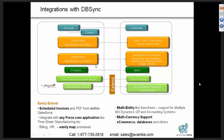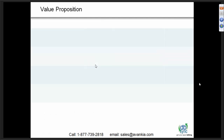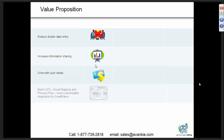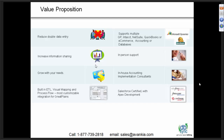We're going to jump into the product demonstration, but before that I'd also like to talk about the value proposition. The reason for using DB Sync is to reduce double data entry and increase information sharing. You can also grow with your needs. This is built on ETL — extract, transform, and load — and we also have visual mapping and process flow. This is the most customizable integration for GP. One of the databases is a master database and you push and pull information from there, sharing it across the board, so you can see GP within Salesforce.com or Salesforce.com can go into GP, saving you time, effort, and ultimately money.